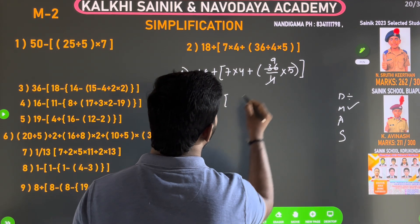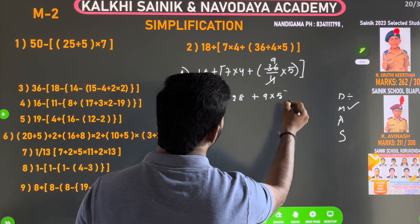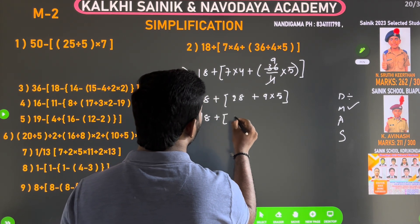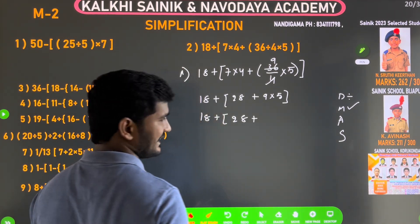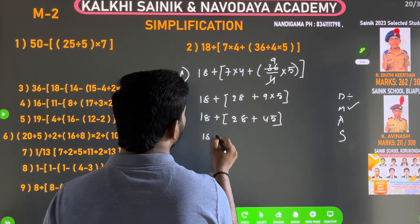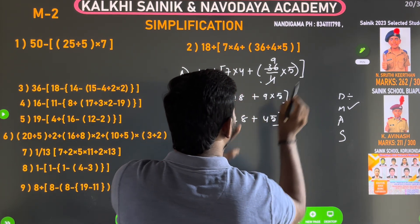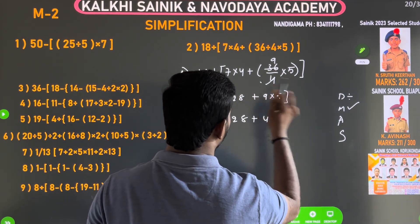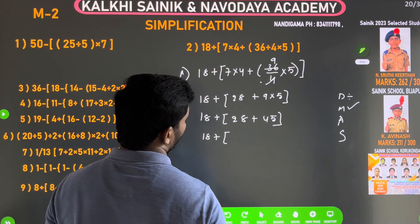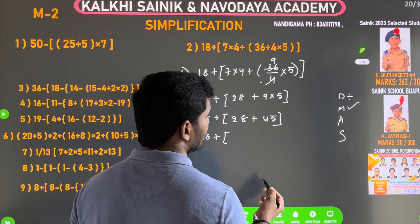7 into 4 is 28. 9 times 5 is 45. This purpose is 18 plus. If you close the bracket, we can do it in the open bracket category. 28 plus 9 into 5 is 45. Now, 28 plus 45 gives us 70.